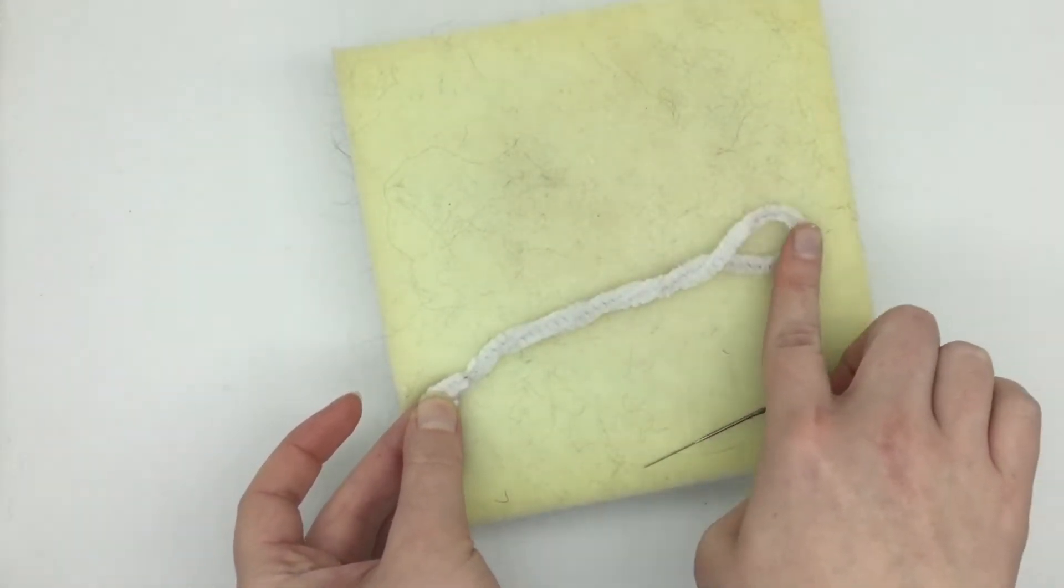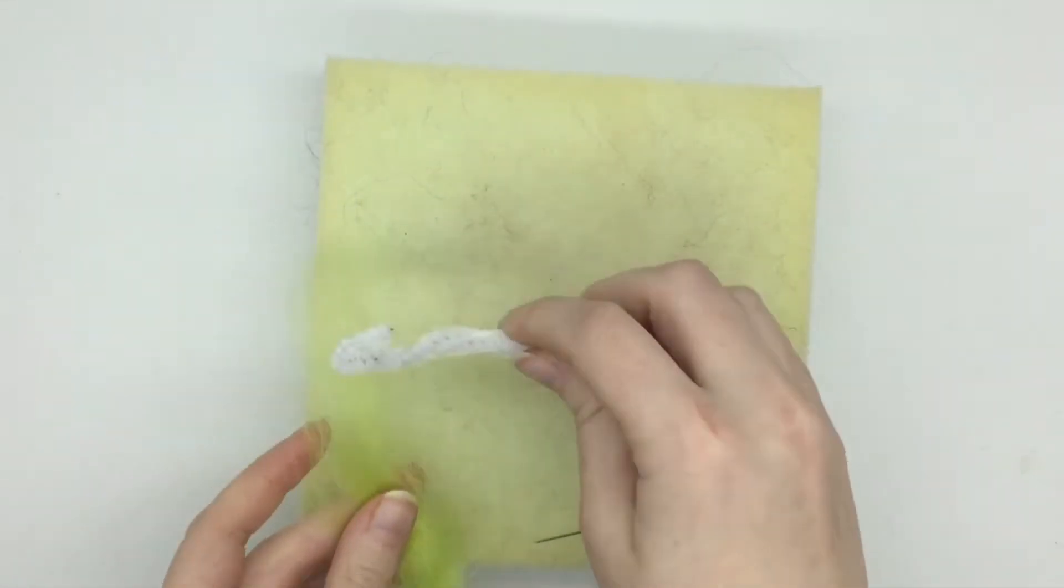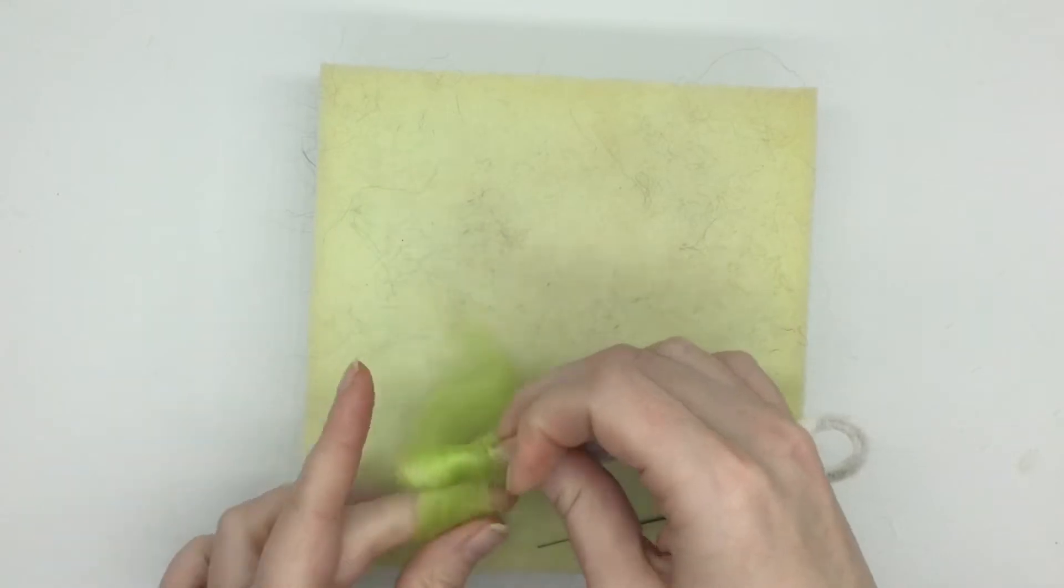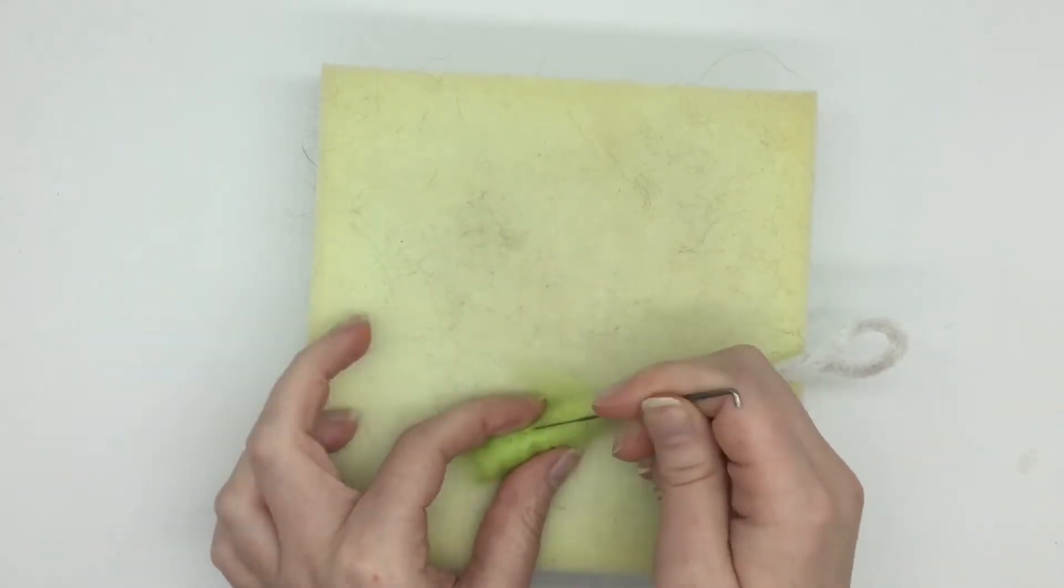The next thing you want to do is felt along the stem. To do this, you're going to get a section of your green felting wool and just wrap that around the twisted portion of your pipe cleaners.